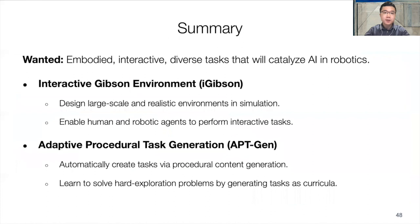To summarize, we would like to have embodied, interactive, and diverse tasks that will catalyze AI in robotics. In the first part of this talk, Fei-Fei introduced the interactive Gibson environment, which aims to design large-scale and realistic simulation environments to enable human and robotic agents to perform interactive tasks. Then in the adaptive procedural task generation project, we designed an algorithm to automatically create tasks via procedural content generation, such that the agent can learn to solve hard exploration problems by generating tasks as curricula. Thank you.